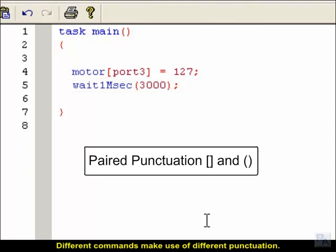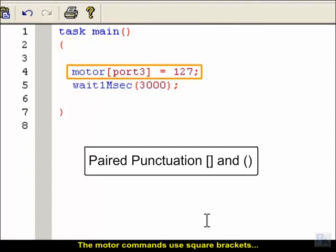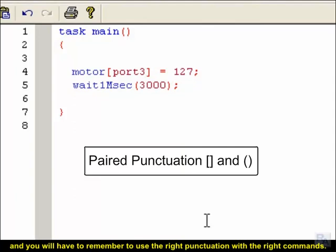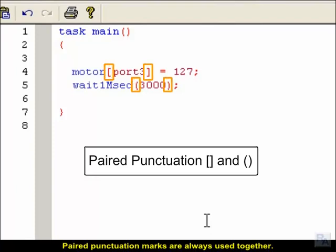Different commands make use of different punctuation. The motor command uses square brackets and the wait1msec command uses parentheses. This is just the way the commands are set up, and you will have to remember to use the right punctuation with the right commands. Paired punctuation marks are always used together, and surround specific important parts of a statement to set them apart.